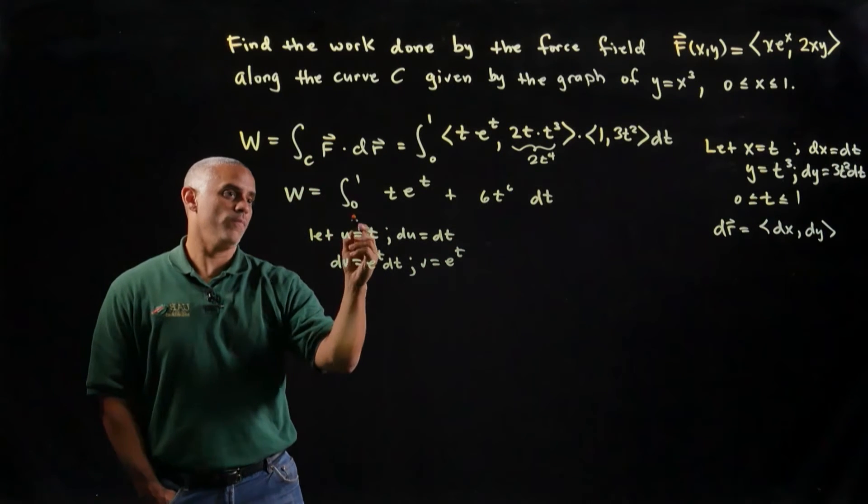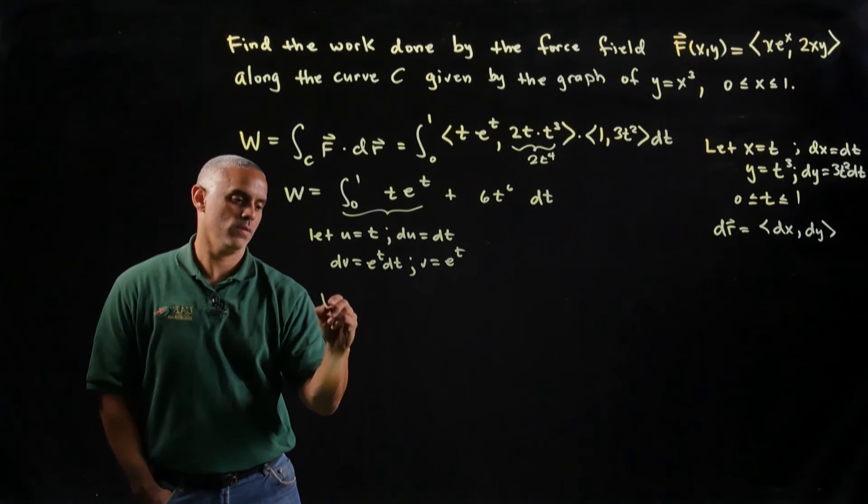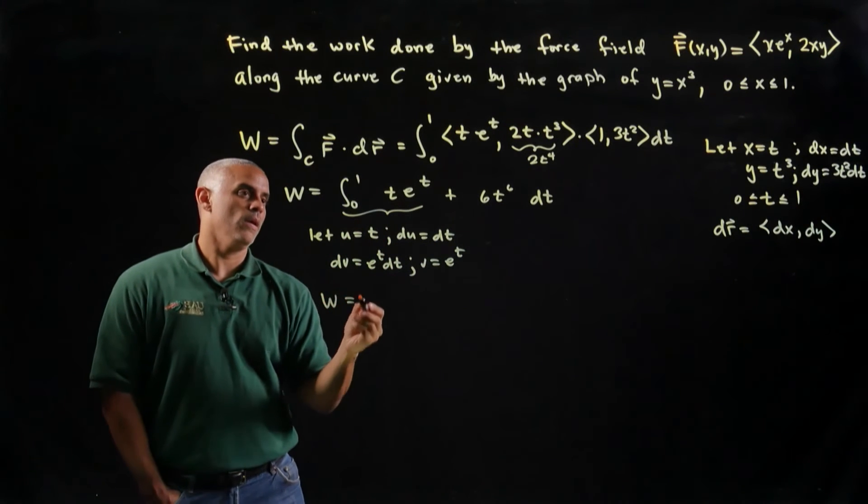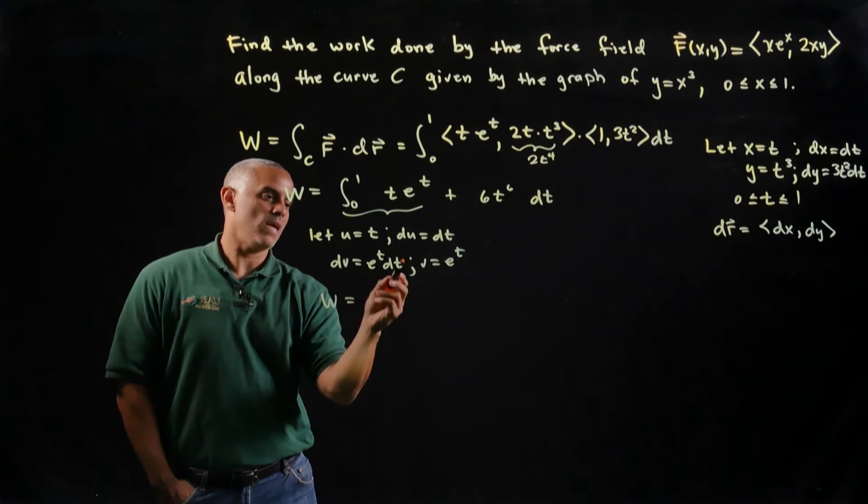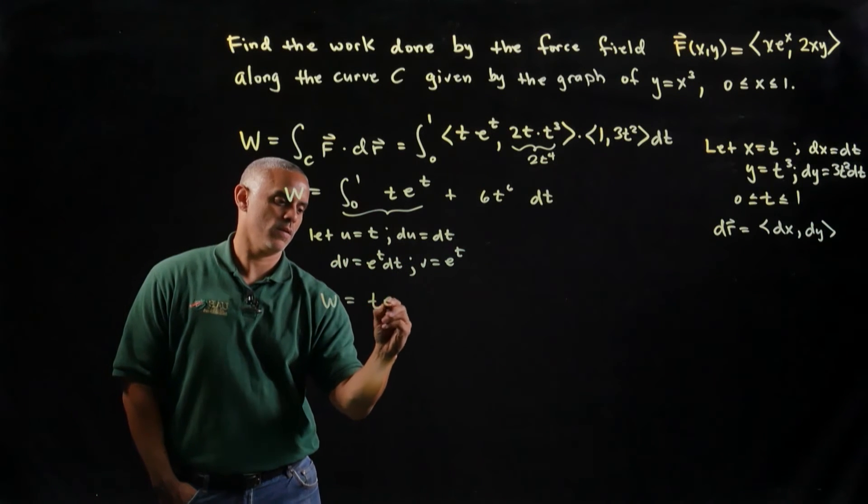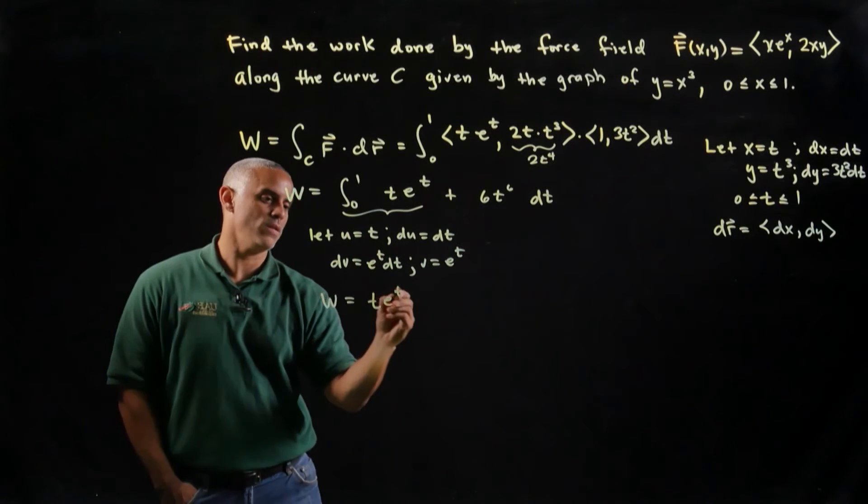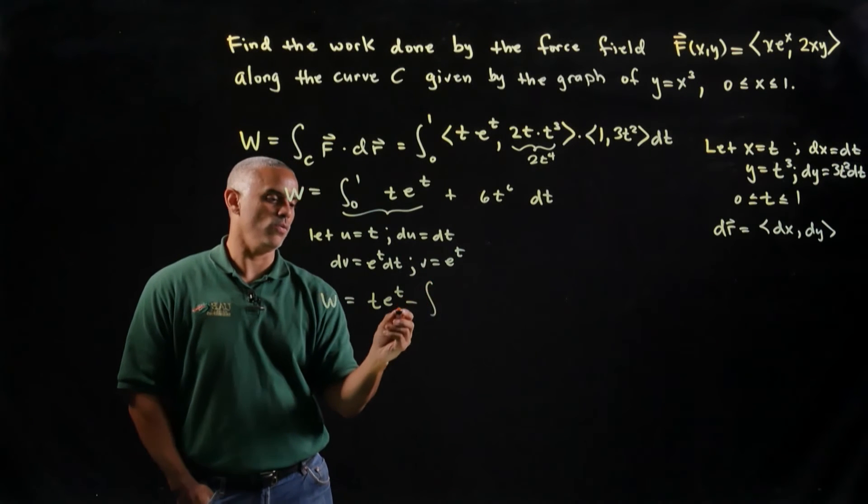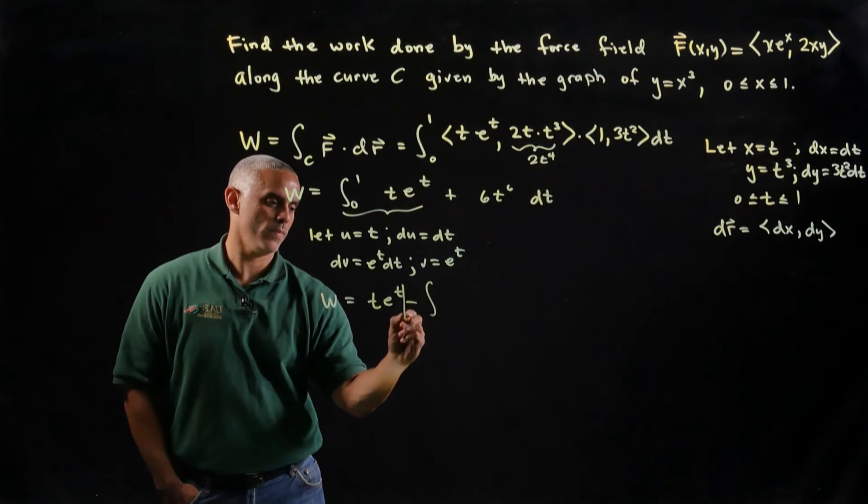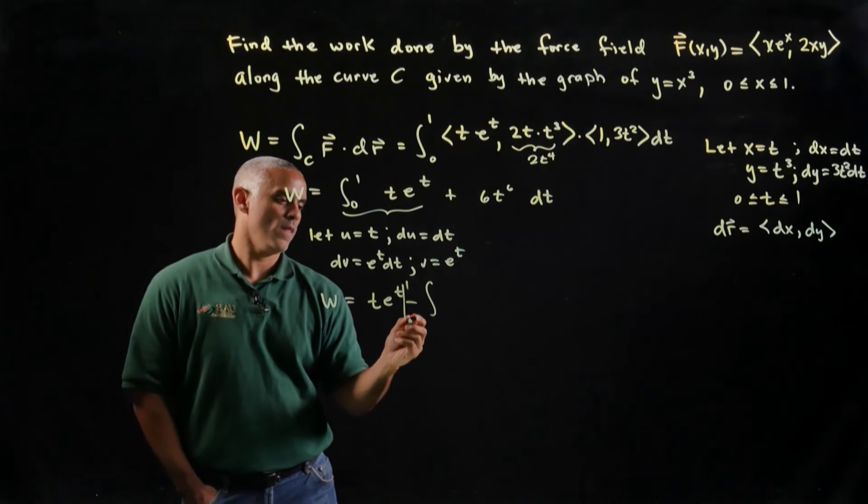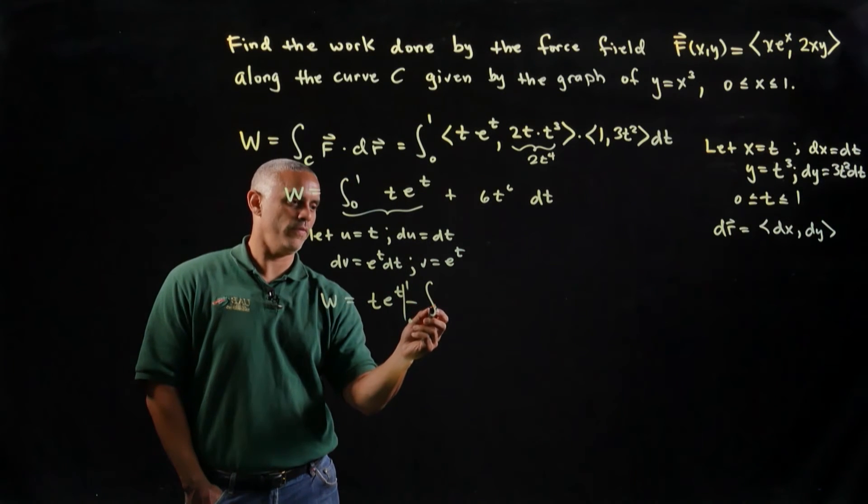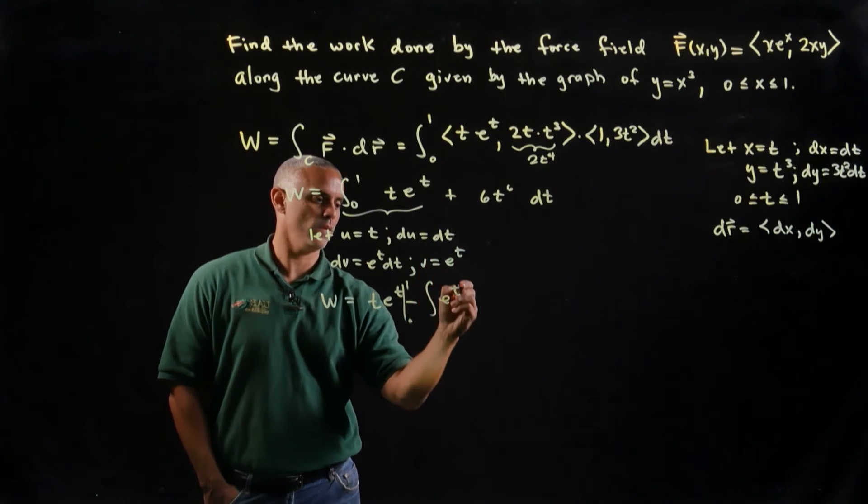So now, if I just wrote up this expression, let's see what I get. I get u times v, or te^t, and some of us may just remember this, minus the integral of v du, and remember this is te^t, sort of evaluated from 0 to 1, minus the integral of v du, minus e^t dt.